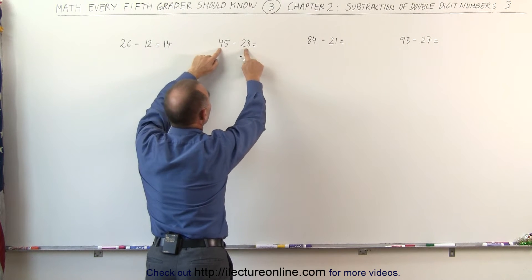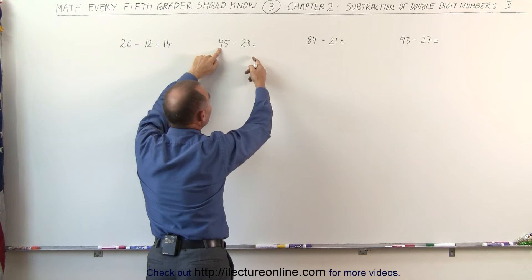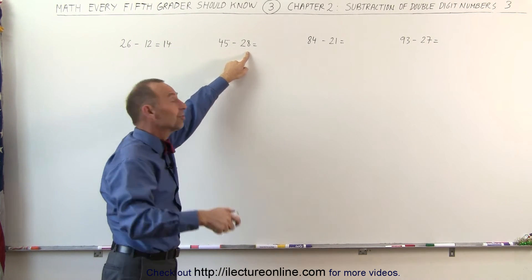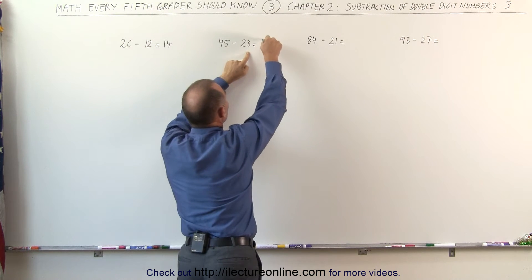So 45 minus 30, 4 minus 3 is 1, that gives me 15. But I subtracted 2 more than I should. I add that back up. 15 plus 2 is 17. My answer is 17.